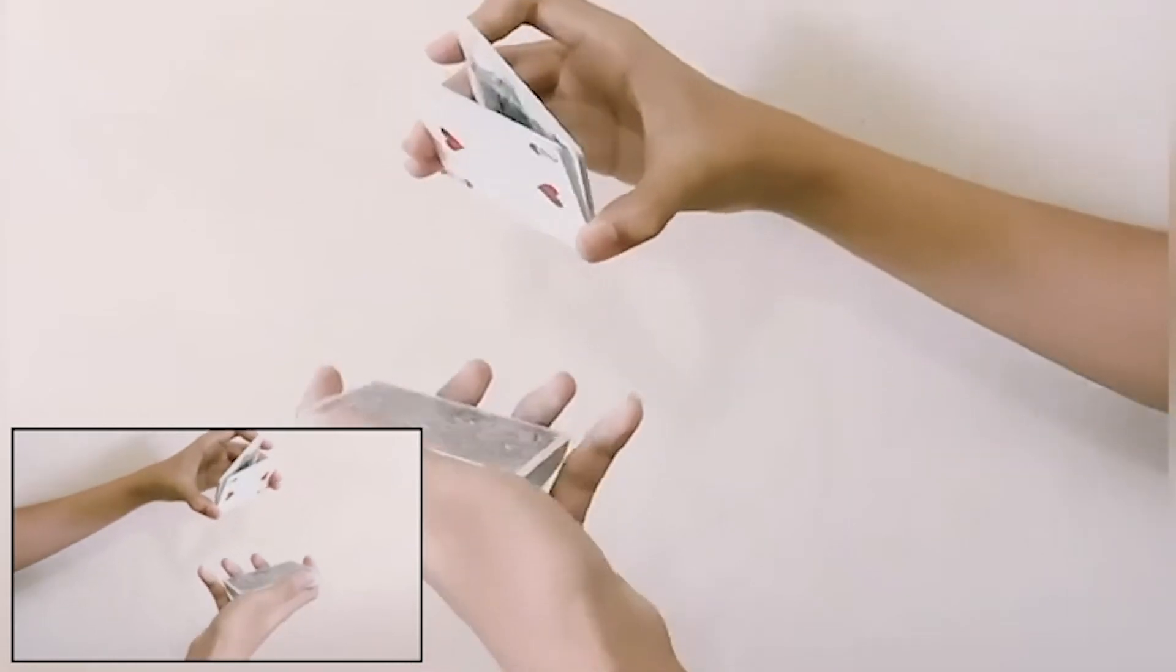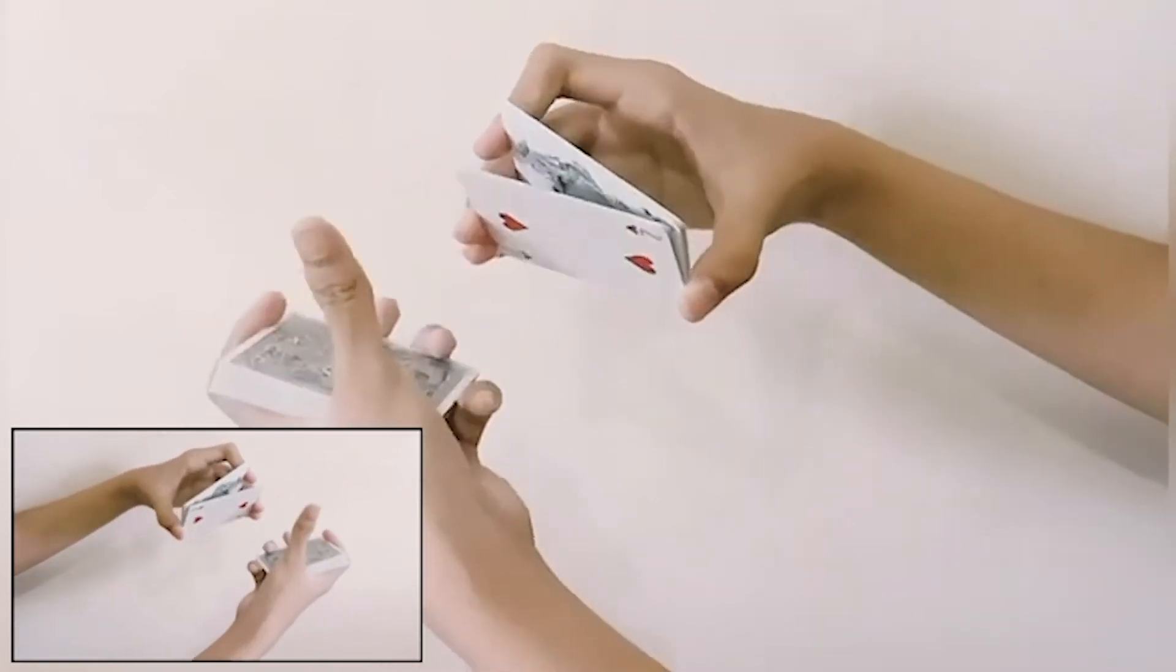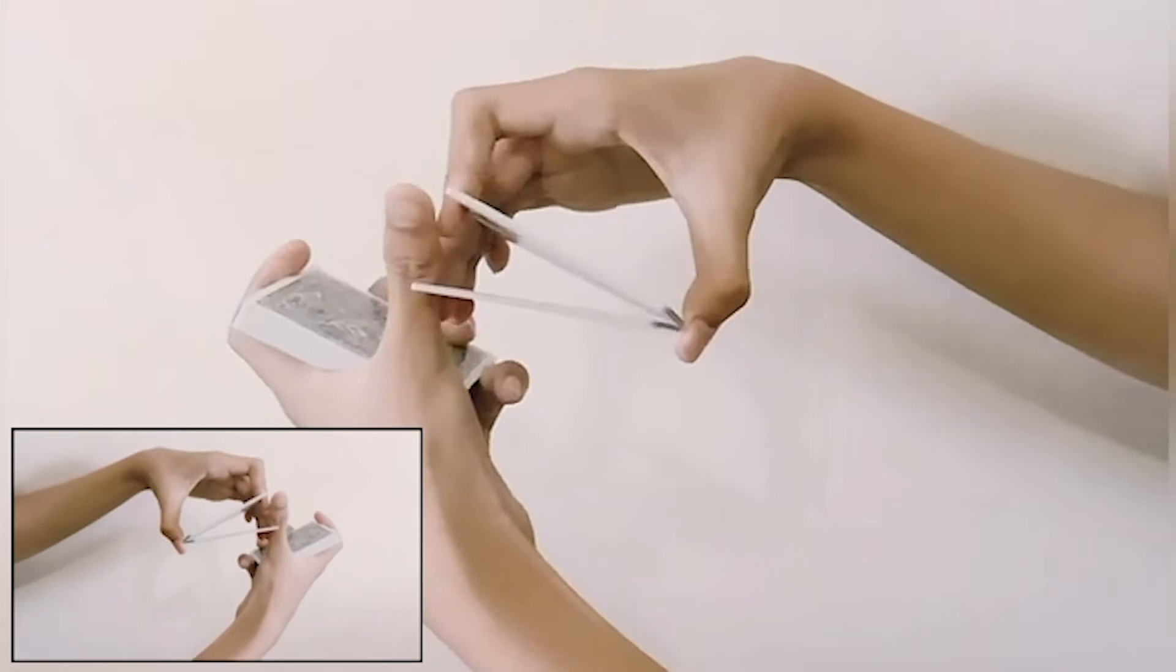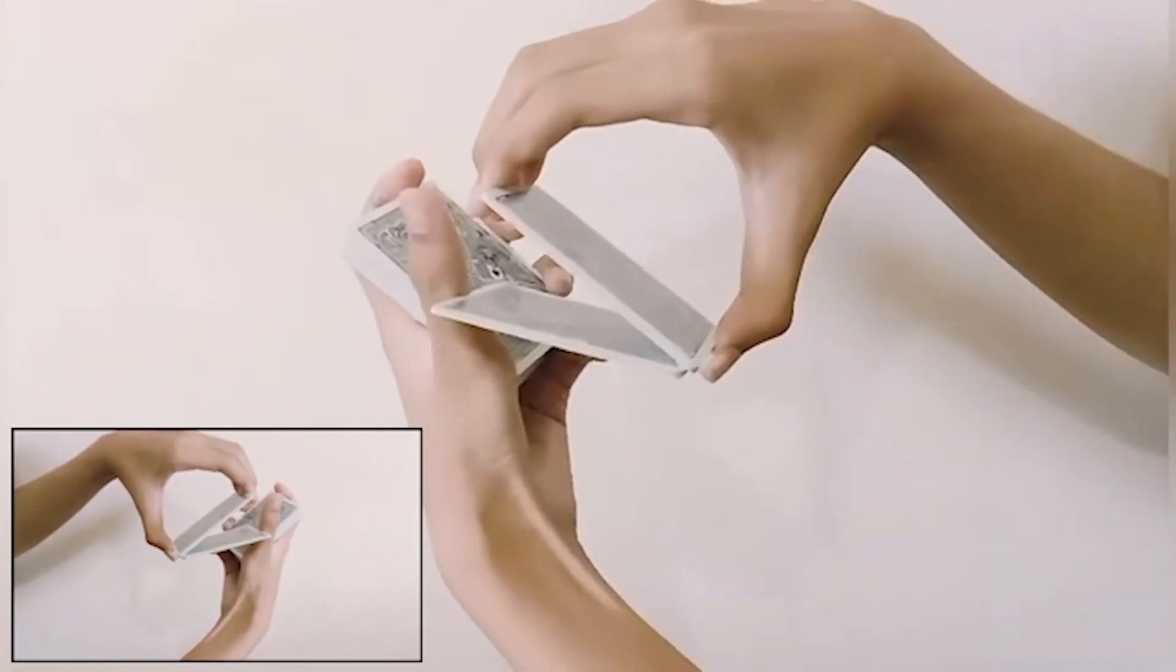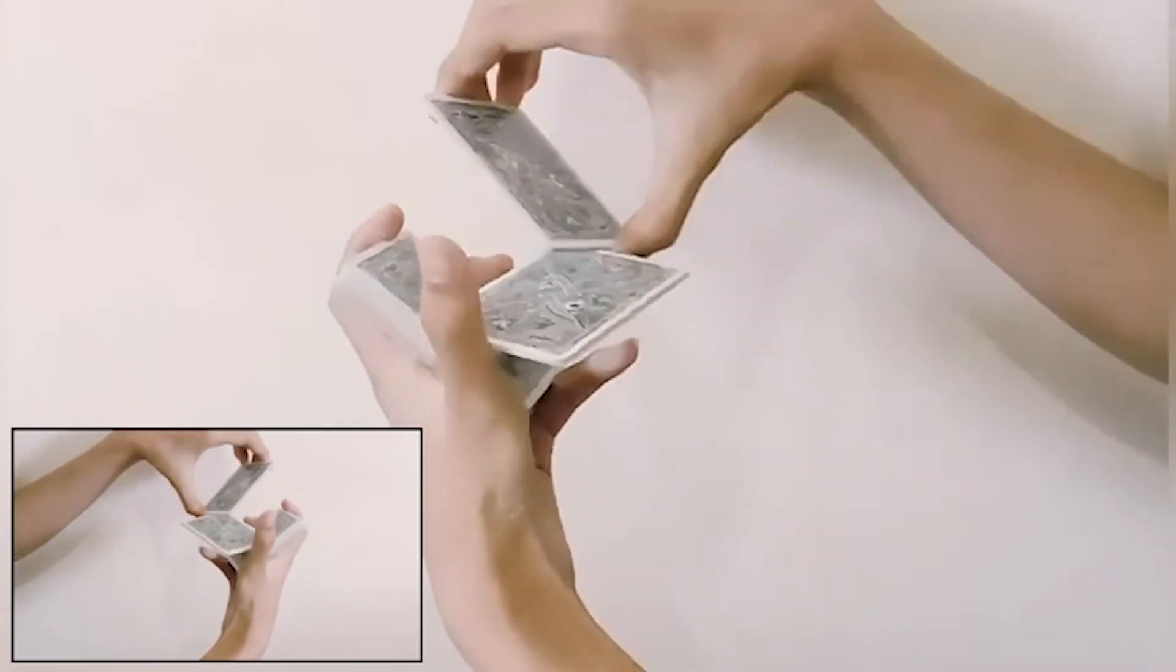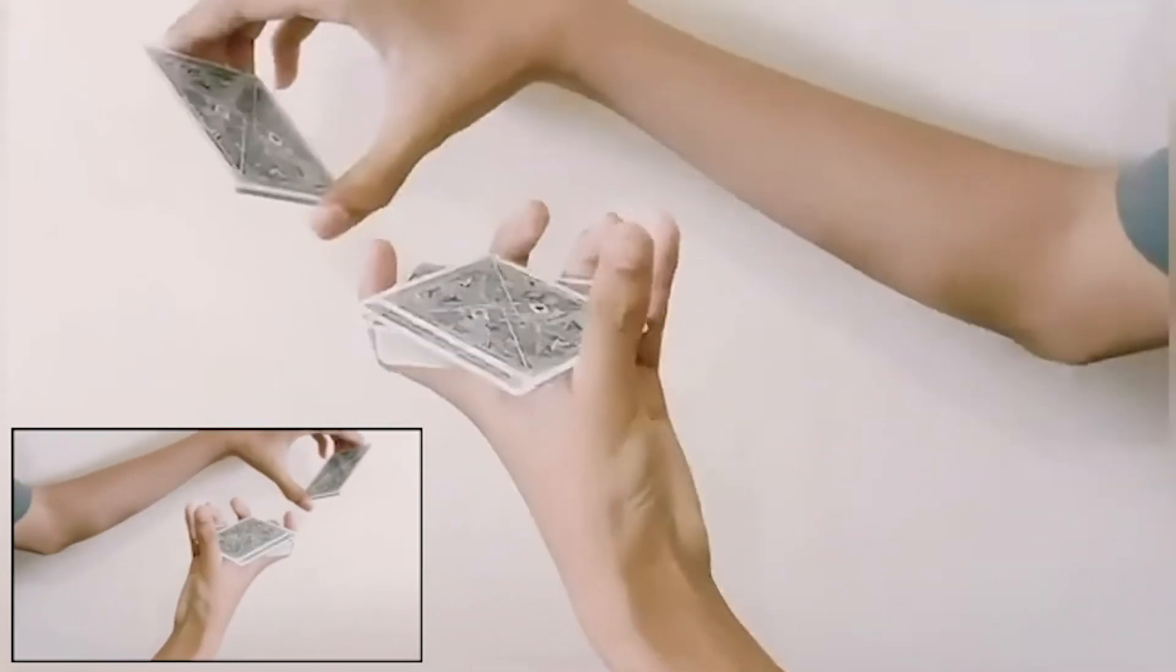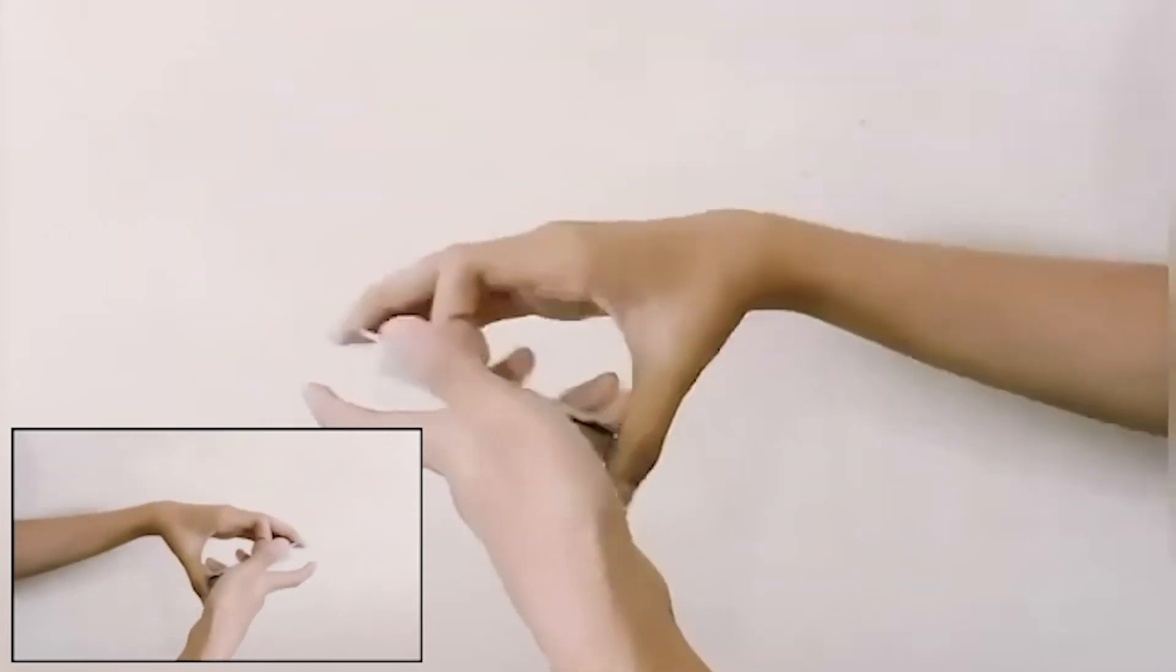And from here, you're going to use your left thumb and put the packet like here. And then just rotate it between your thumb until the packet lines up. So once again, from here...